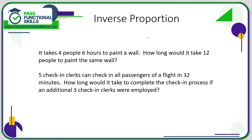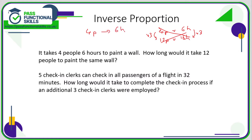But with inverse proportion — otherwise known as indirect proportion — as one value goes up, the other goes down. It's normally quite logical. For example: it takes 4 people 6 hours to paint a wall. How long would it take 12 people? Many people think 4 × 3 = 12, so 6 × 3 = 18 hours — but that's nonsense. More people doing the job means less time. We have three times more people, so it takes three times less time: 6 divided by 3 equals 2 hours.